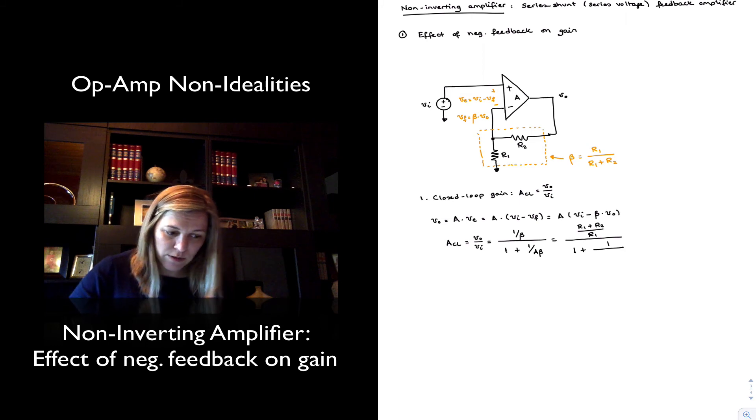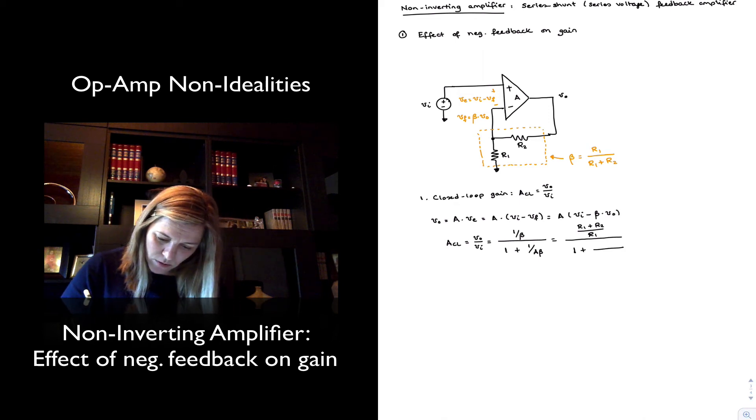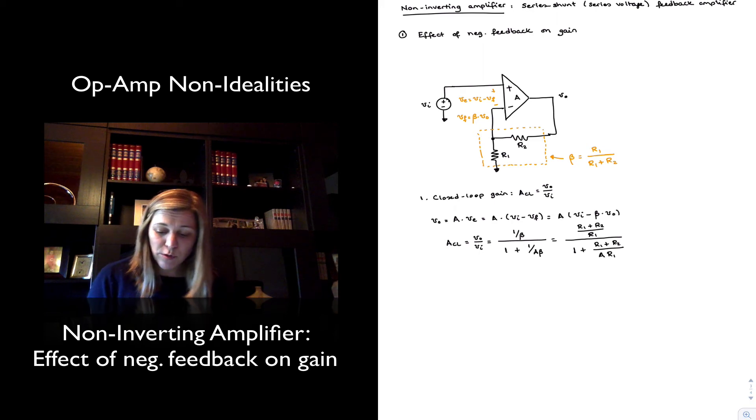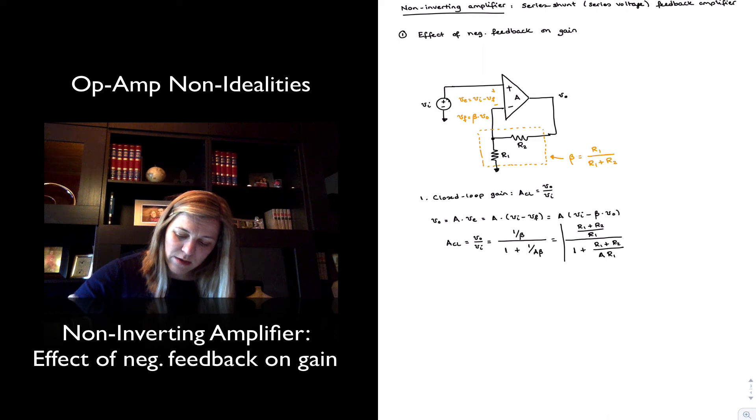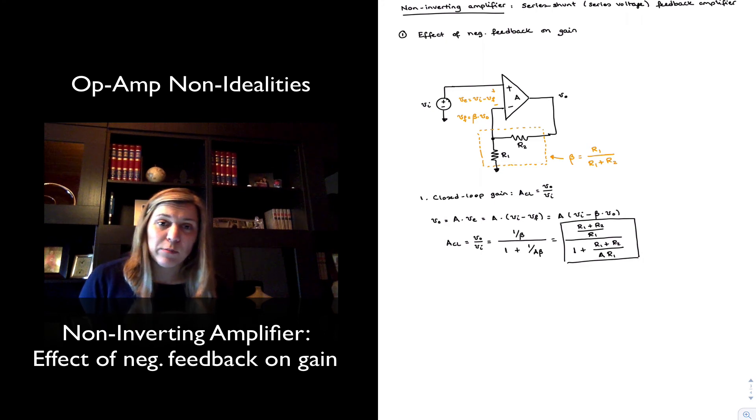A times beta will be R1 plus R2 divided by R1. So I can just say R1 divided by R1 plus R1 plus R2 divided by R1, and then A in the denominator. This will be my expression for the closed loop gain of the non-inverting amplifier.